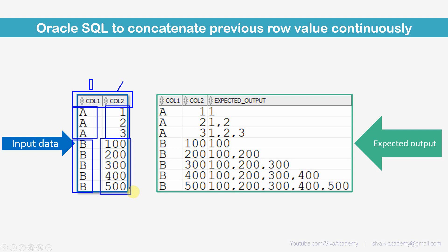The expectation is we need to concatenate the list of values for each row with its previous rows. For the first row, we just print 1 as it is. For the second row, we concatenate the first and second row values to get 1, 2. For the third row, we concatenate all three to get 1, 2, 3.